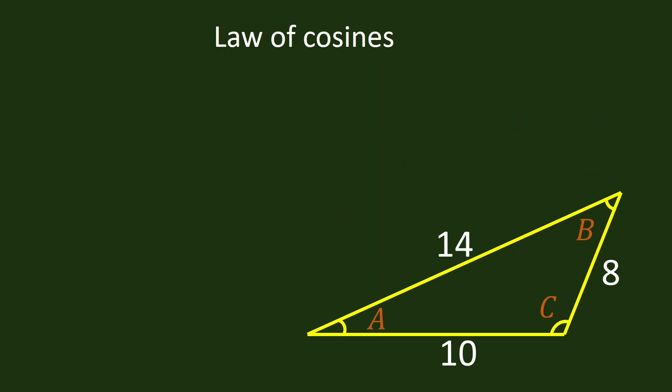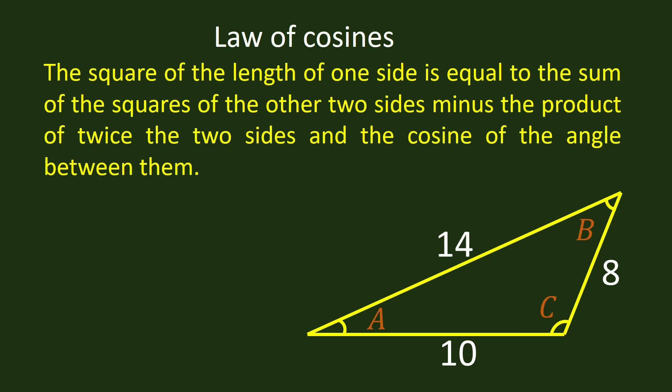By applying the law of cosines, we state the following: The law of cosines states that the square of the length of one side is equal to the sum of the squares of the other two sides minus the product of twice the two sides and the cosine of the angle between them. We will use this law of cosines to solve all the angles of this oblique triangle.